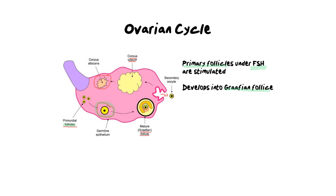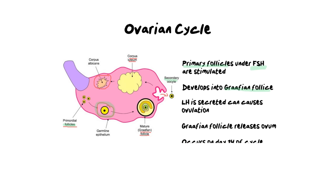The graafian follicle has the oocyte or ovum sitting on the inside of it, and it also has a really large layer sitting on the outside. All of these components are needed in order to have a successful ovulation. To get the secondary oocyte out of the ovary, we need one more hormone — luteinizing hormone, or LH — which is also produced by the pituitary gland. It causes what we call ovulation, which is essentially the bursting of the egg cell out of the ovary and into the fallopian tube. The ovary and the fallopian tube don't actually touch each other, so the egg needs to burst across from one location to the next.